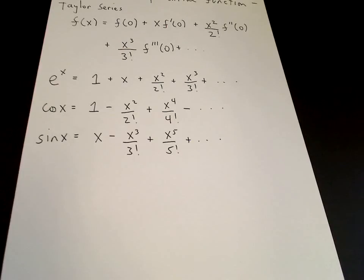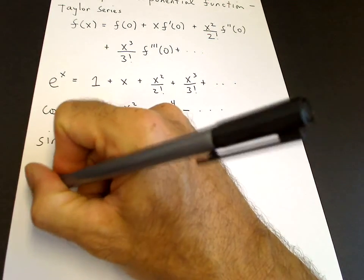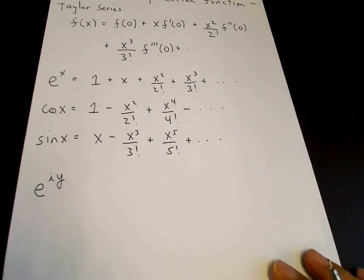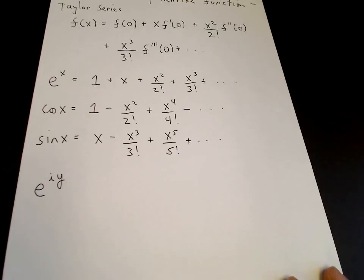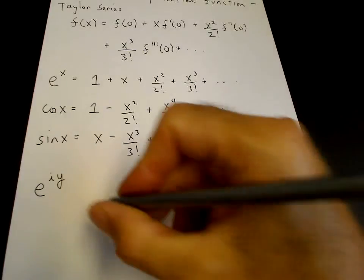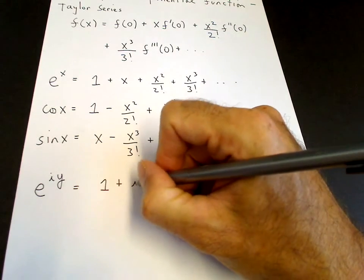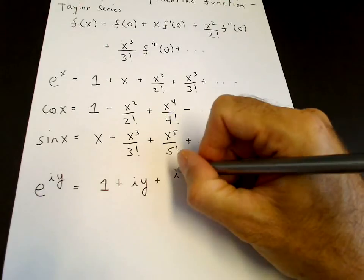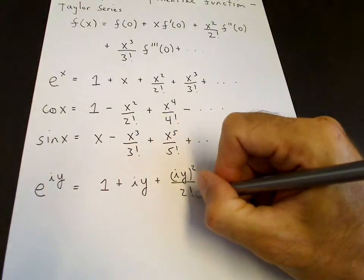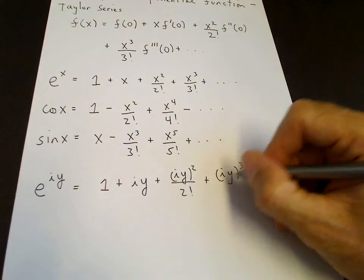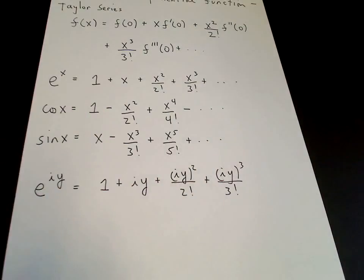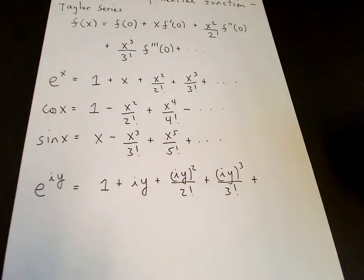Now, what happens if we consider e to some imaginary power? Let's consider e to the i y. We don't know how to define e to the i y, but we can define it from the power series. So e to the i y is 1 plus i y, plus i y squared over 2 factorial, plus i y cubed over 3 factorial, and so on.